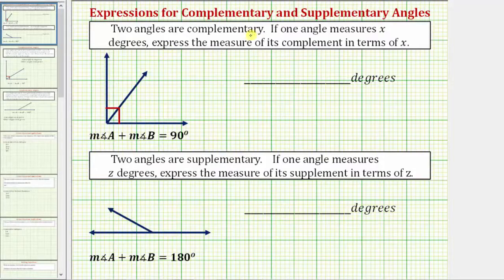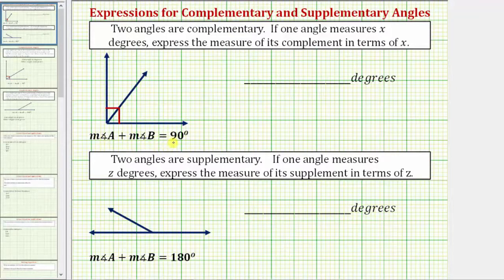We're told two angles are complementary. If two angles are complementary, the sum of their measures equals 90 degrees, which means if you were to combine the two angles, they would form a 90 degree angle, or a right angle, as shown here.